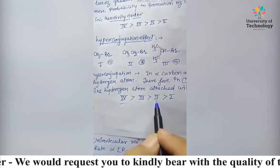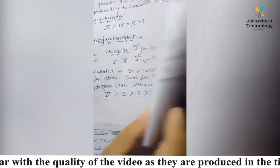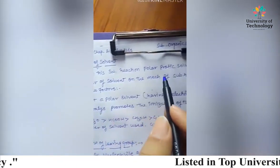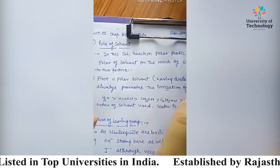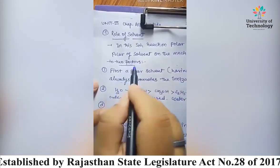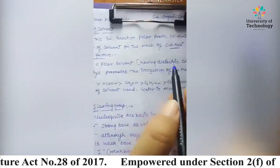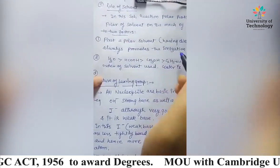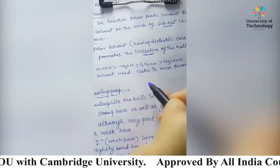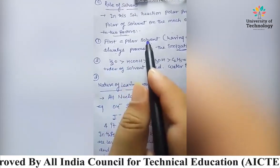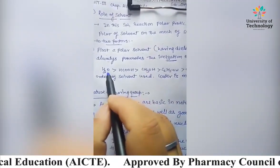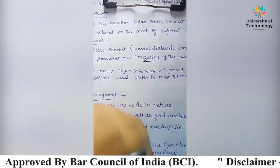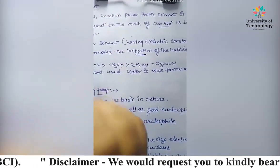The reactivity order for hyperconjugation is: nine hydrogens first, then isopropyl third, then second, then first. The third point is the role of solvent in SN1 reaction. A polar protic solvent is used. Polar solvents with high dielectric constant promote ionization of the halide. The reactivity order of solvents is: water, then formic acid, methanol, ethanol, and acetic acid.